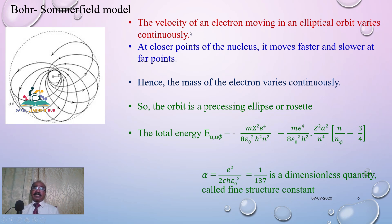The model will be like this: The velocity of the electron moving in the elliptical orbit varies continuously. Therefore, the velocity goes on increasing. At the closer points of the nucleus, it moves faster, and at the faraway points, it moves slower.